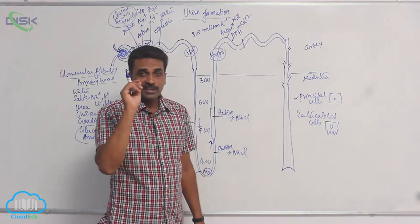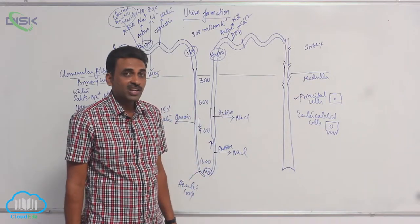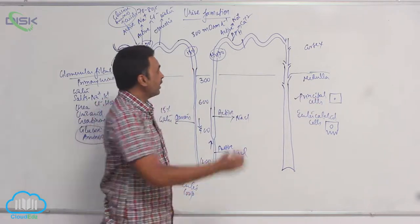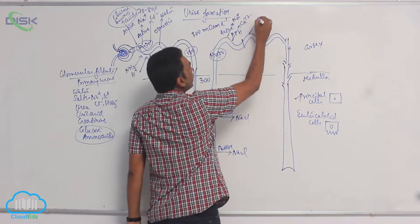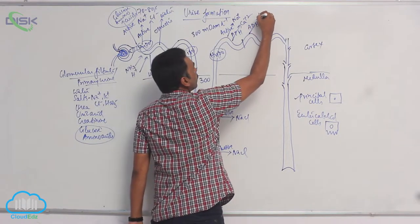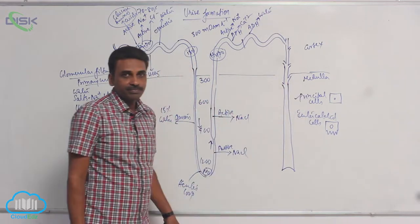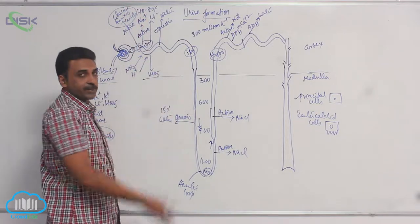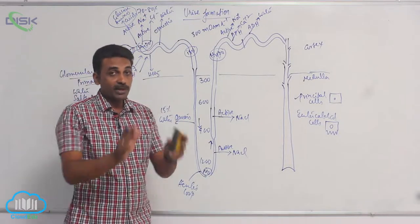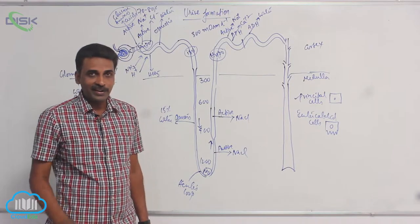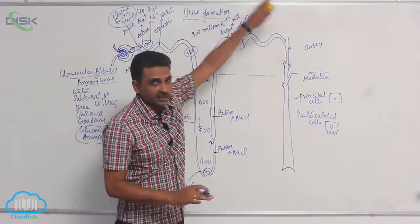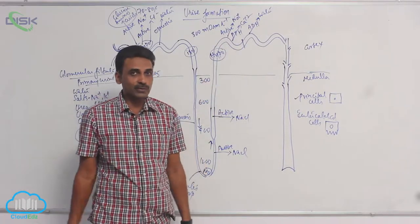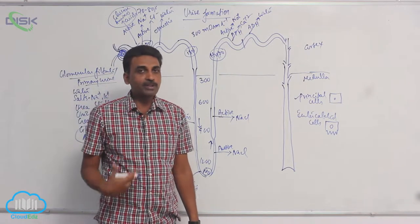Principal cells have receptors for two hormones: ADH and aldosterone. Under the influence of ADH, water is reabsorbed. It is important to remember that in earlier segments about 85% of water reabsorption is obligatory and unregulated, but in this part — the terminal DCT and collecting duct — water reabsorption is regulated by hormones and depends upon the requirements of the body.